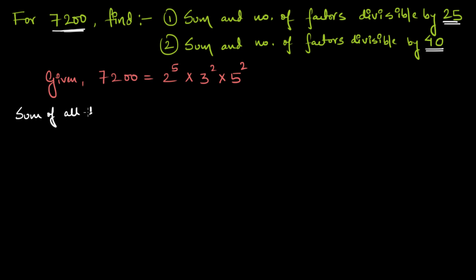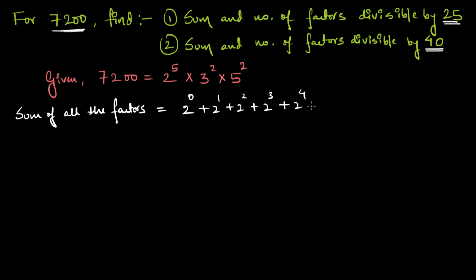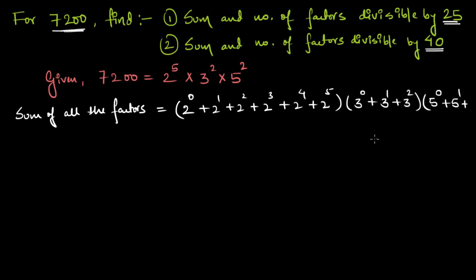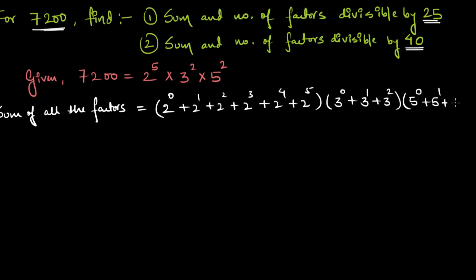The sum of all factors of 7200 equals: (2^0 + 2^1 + 2^2 + 2^3 + 2^4 + 2^5) multiplied by (3^0 + 3^1 + 3^2) multiplied by (5^0 + 5^1 + 5^2). When we multiply these out, each term represents one of the factors of 7200, and all terms together give the sum of all factors.